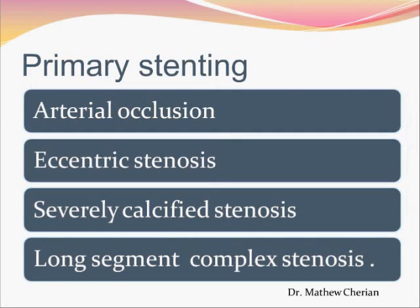Primary stenting in an iliac lesion is indicated in four situations: first, if there is occlusion, since long-term results with stenting are better than plain balloon angioplasty; second, if there is eccentric stenosis, as the normal vessel stretches with a balloon and the lesion will not adequately dilate; third, in severe calcific stenosis, where balloon dilatation risks vascular rupture; and fourth, in long-segment complex stenosis, where results of angioplasty alone are not good.